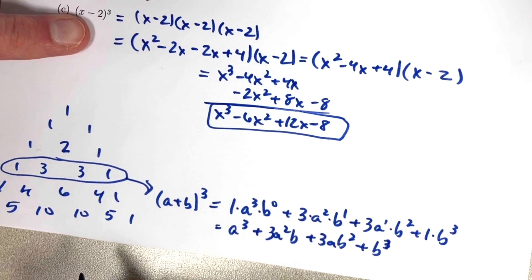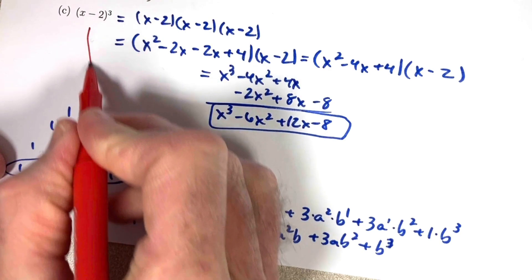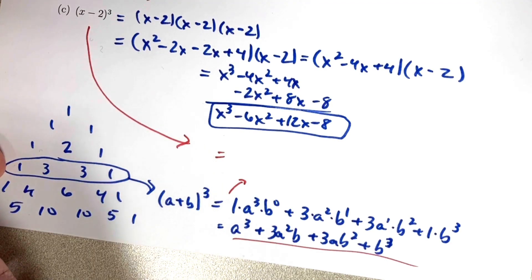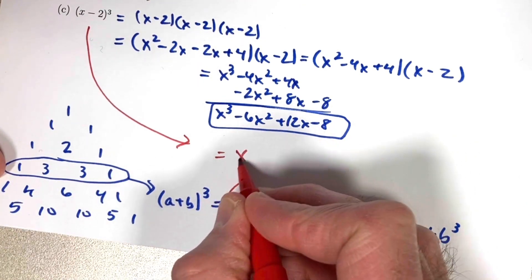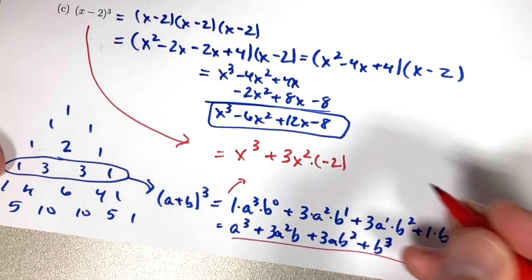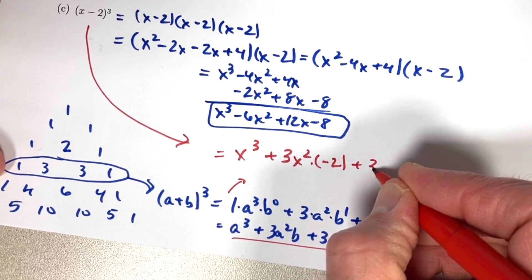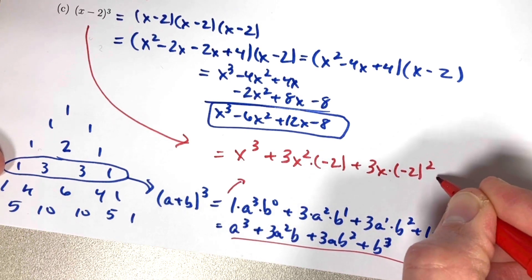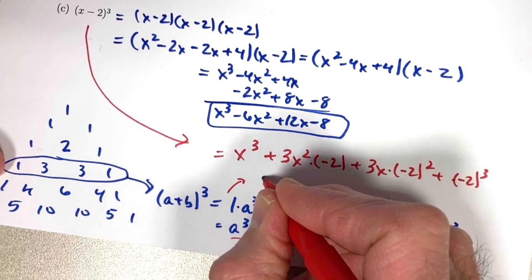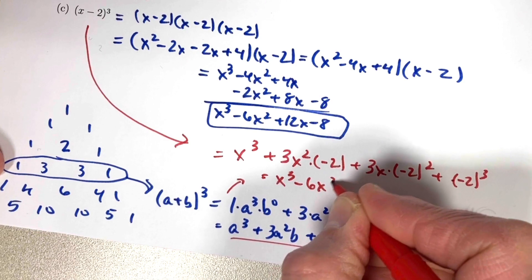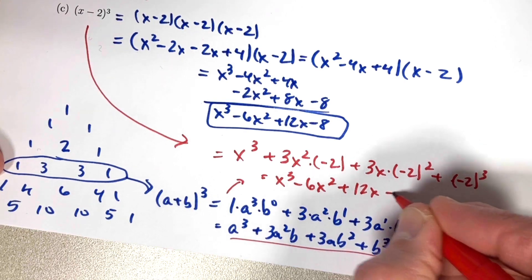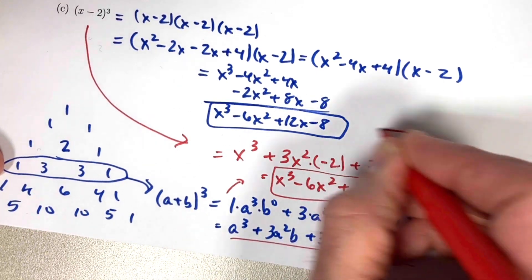Applying the binomial theorem to (x minus 2) cubed, let a equal x and b equal negative 2. We get x cubed plus 3x squared times negative 2, plus 3x times negative 2 squared, plus negative 2 cubed. Simplifying: 3 times negative 2 is minus 6, negative 2 squared is 4 times 3 is 12, and negative 2 cubed is minus 8. This gives x cubed minus 6x squared plus 12x minus 8 — the same answer as before.